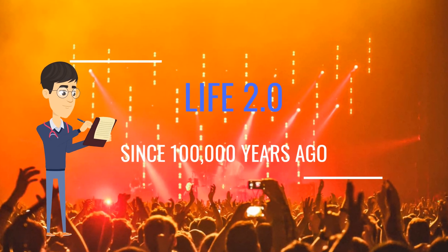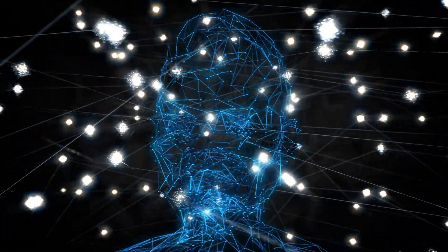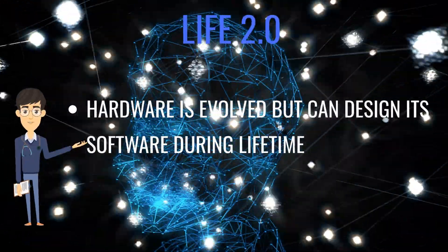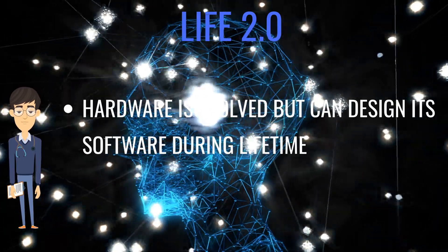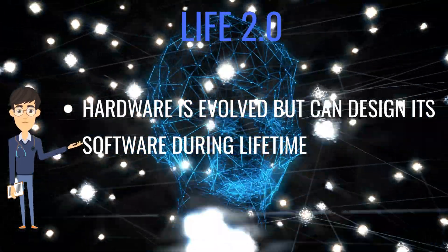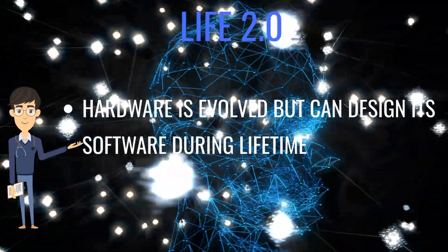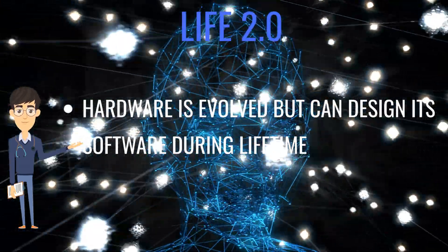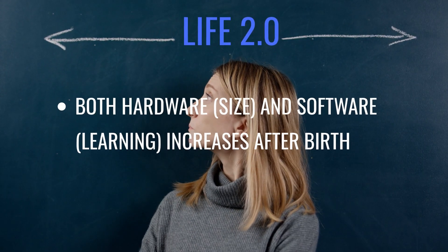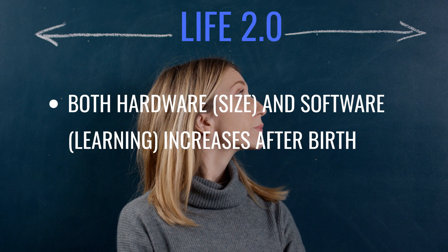Life 2.0 began over 100,000 years ago with the emergence of Homo sapiens. In Life 2.0, hardware is evolved via DNA mutation, but software can be modified to enable learning during the lifetime of an individual. Human DNA stores around one gigabyte of data — six orders of magnitude smaller than the 100 terabytes that human synapses store. That begs the question: where does the information come from if it was not hard-coded into one's DNA?